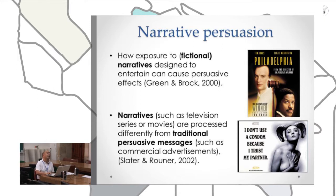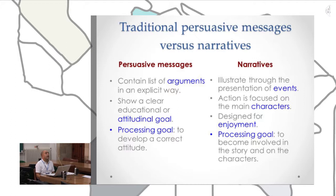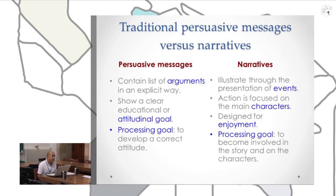There are important differences between traditional persuasive messages and narratives. Firstly, persuasive messages usually contain a list of arguments in an explicit way because they are trying to sell something. Secondly, they show a clear attitudinal goal — the goal of the message is to change attitudes. On the other hand, narratives try to illustrate through the presentation of events; action is focused on the main characters and their behaviors and attitudes, and they are designed for enjoyment.